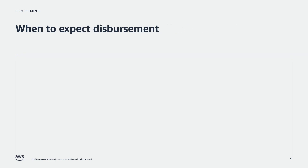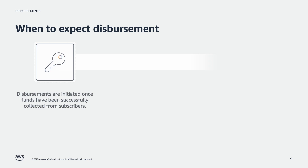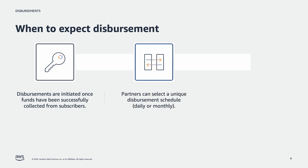There are a few key points to cover when discussing disbursement cycles. First, disbursements are only initiated after funds have been successfully collected from subscribers. Next, disbursements occur monthly or daily, depending on the disbursement preference set by the partner in the AWS Marketplace Management Portal, commonly referred to as AMP.